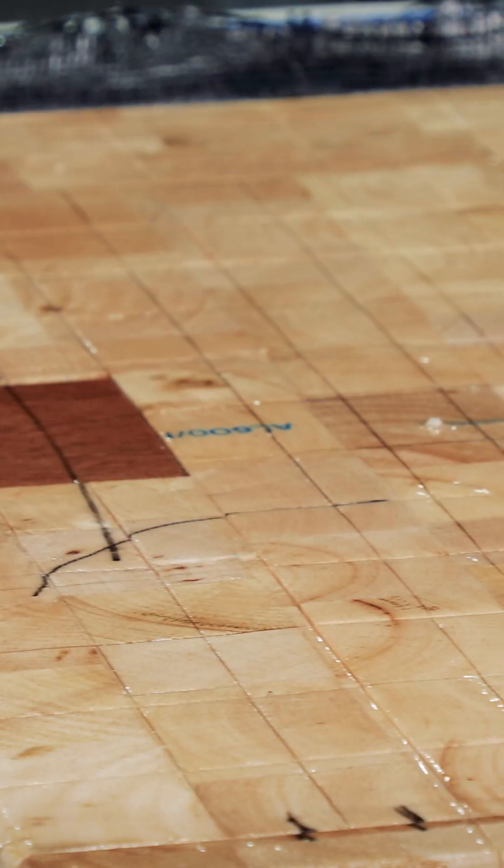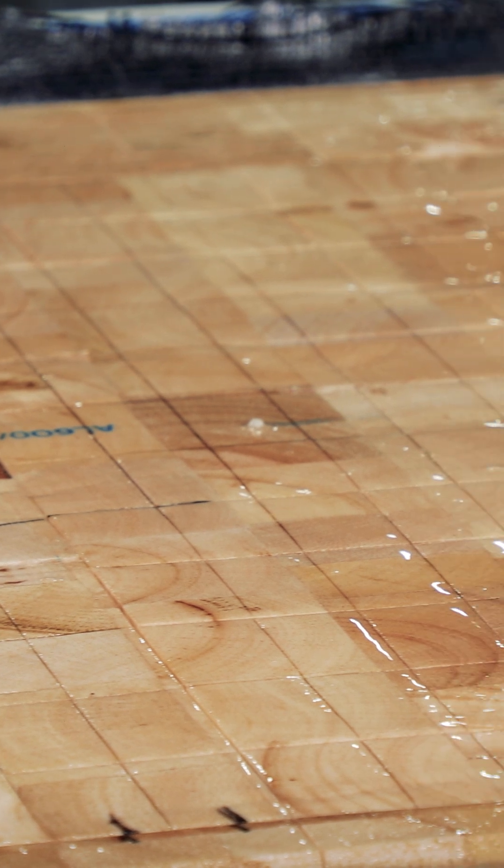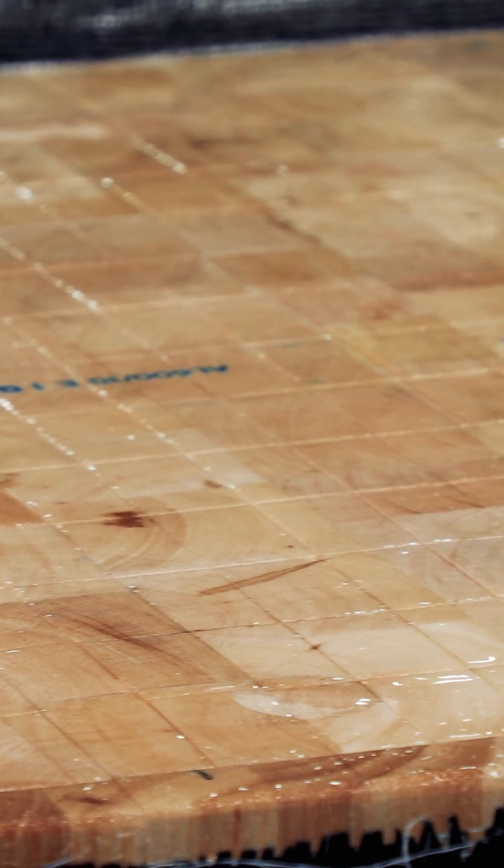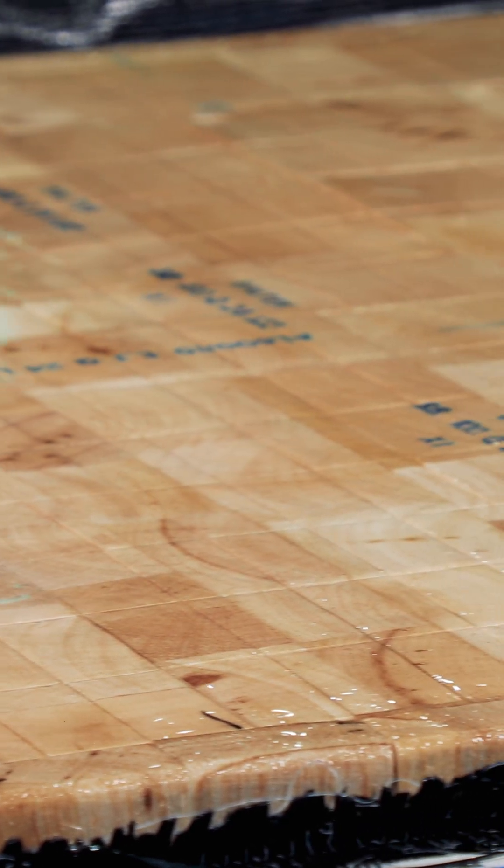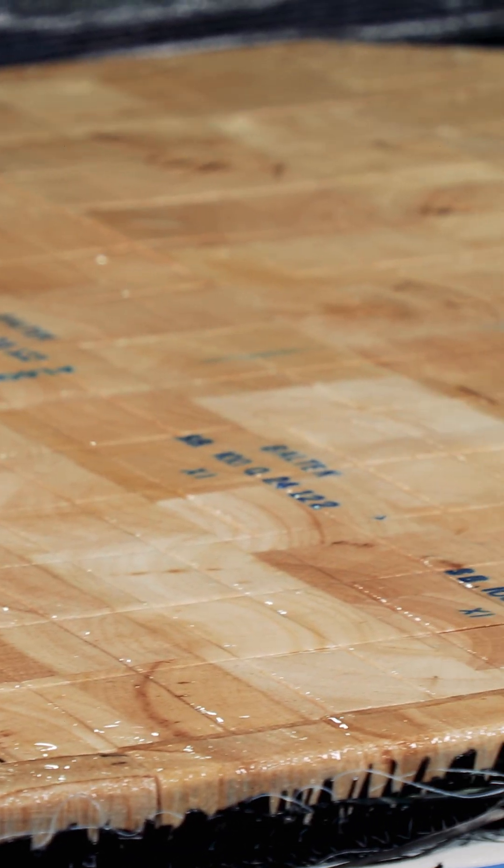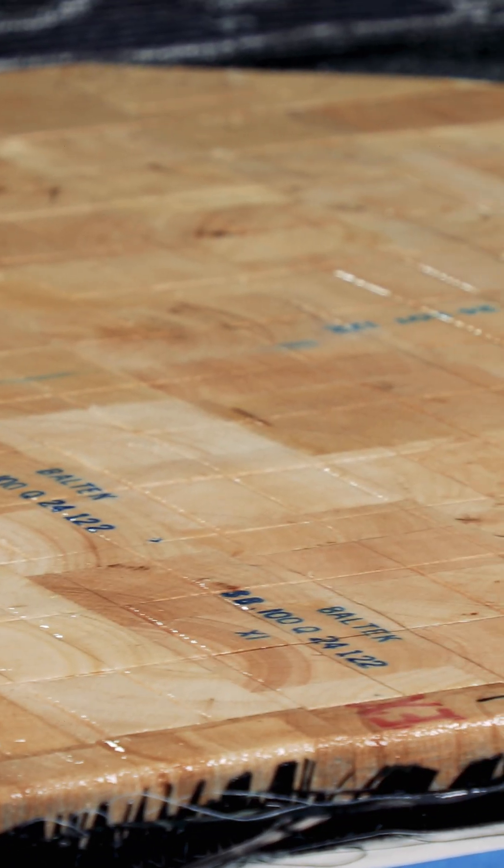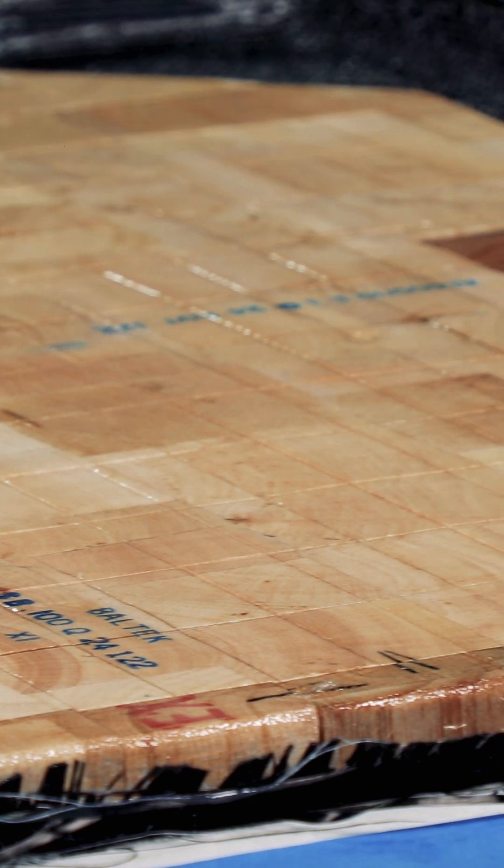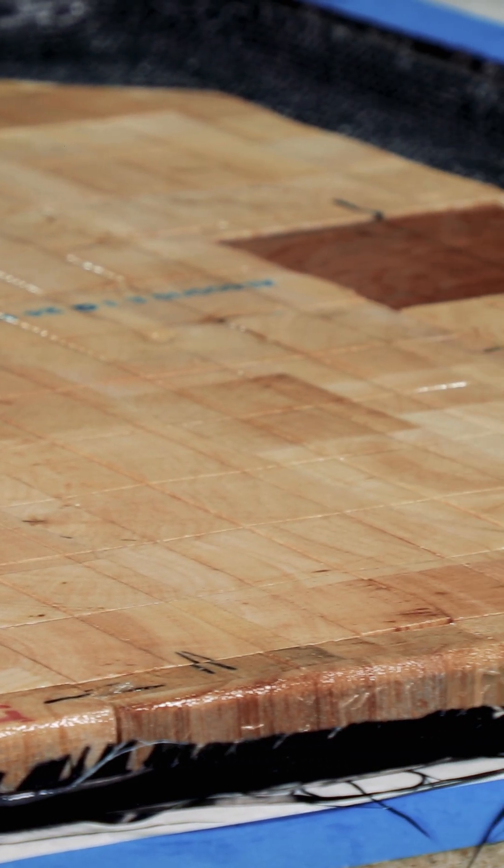If we weren't going to vacuum bag this core in, I would have normally put down a thin layer of epoxy with 406 in it to bed the core. And that makes sure we get good contact between the skin and the core. And then on top, I generally put down another light layer, maybe ketchup consistency, to help fill any cracks or voids and any imperfections that would be between the fabric and the core on this side.